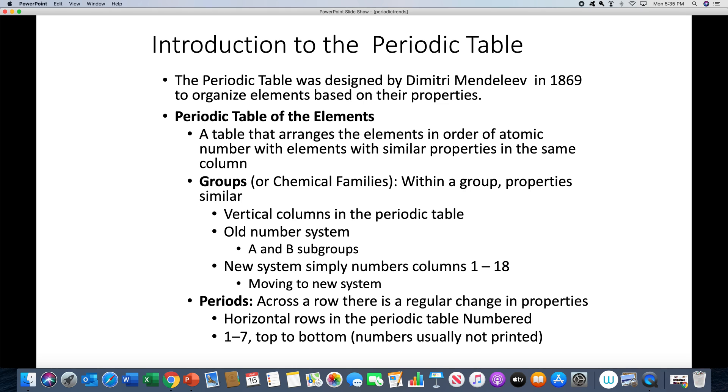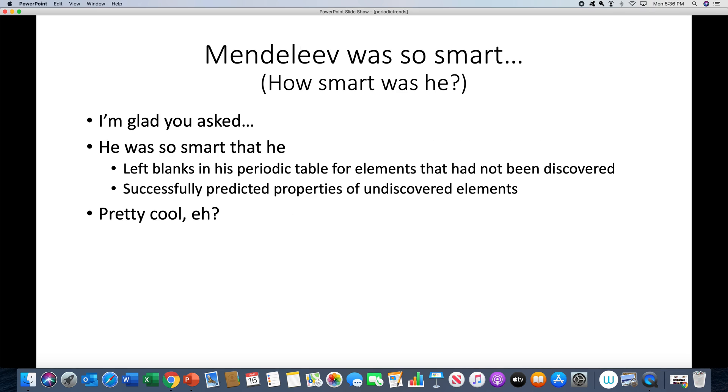A column on the periodic table is called a group or a family. Within a group, the properties are similar - the vertical columns on the periodic table. Now interestingly, the reason that they're similar, we know that Mendeleev did not know, is that everything has a similar configuration. When you look at how things react, we'll tie that together later on. You can kind of tie it to what charge ions may form. Periodic tables frequently have a couple of different numbering systems. In the old days, the vertical columns had A and B subgroups. We're moving to a new system where the columns are just numbered 1 through 18. A row on the periodic table is called a period, and as you go across a period, there's a regular change in the properties.